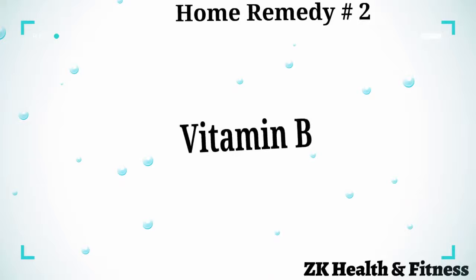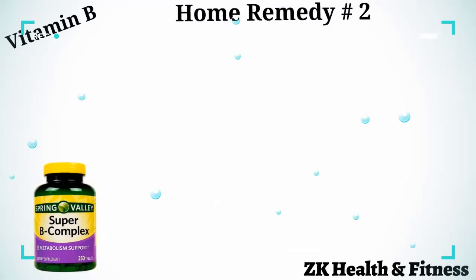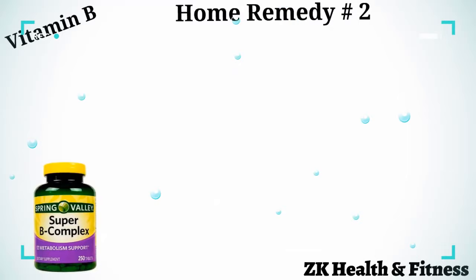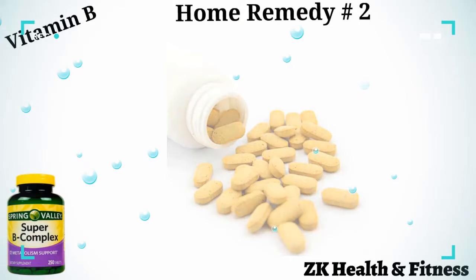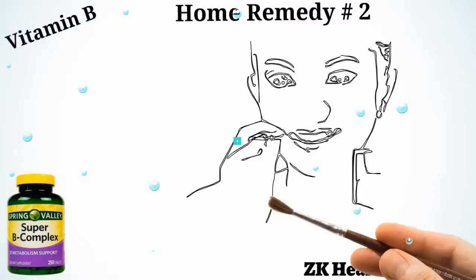Home Remedy 2: Vitamin B. Our bodies require vitamin B to strengthen the immune system and ward off infections. Consume one vitamin B complex capsule every day for three to four days to treat angular cheilitis. You will notice improvement in just 24 hours. Continue to take the supplement for one week to improve your body's resistance.